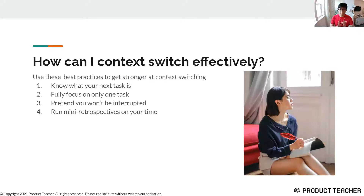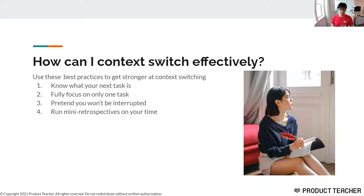So what does that look like? There are really four pieces that help me context switch effectively, and I've seen this work well for students, colleagues, etc. The first thing is to know what your next task is — as soon as you knock out whatever you were working on, you already know exactly what you're doing next.